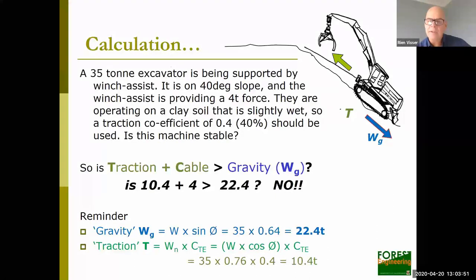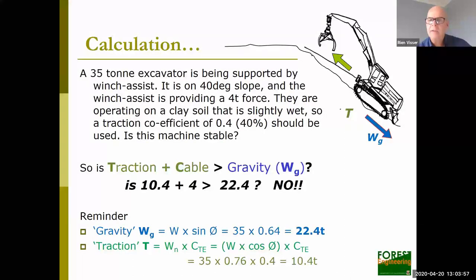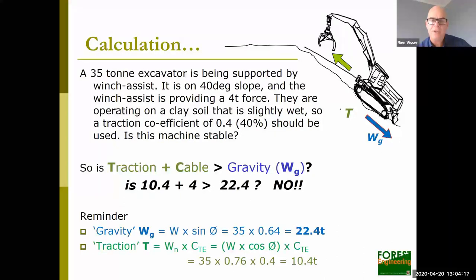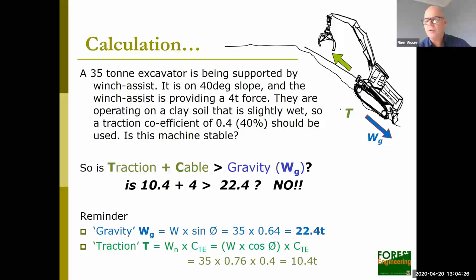Another way to look at this equation is to ask how much force we would need in the cable just to be stable on the slope. Gravity stays at 22 ton, traction won't change unless we move to better soil or have better tracks. In this scenario, we would need somewhere in the order of 12 ton or more of tension in the cable for this machine to be stable. That's how we use this equation to manage safety.